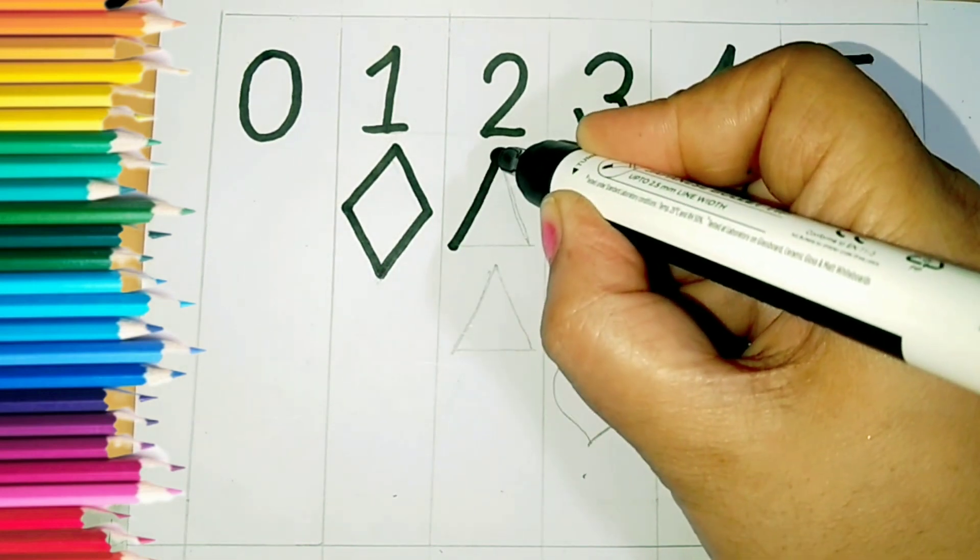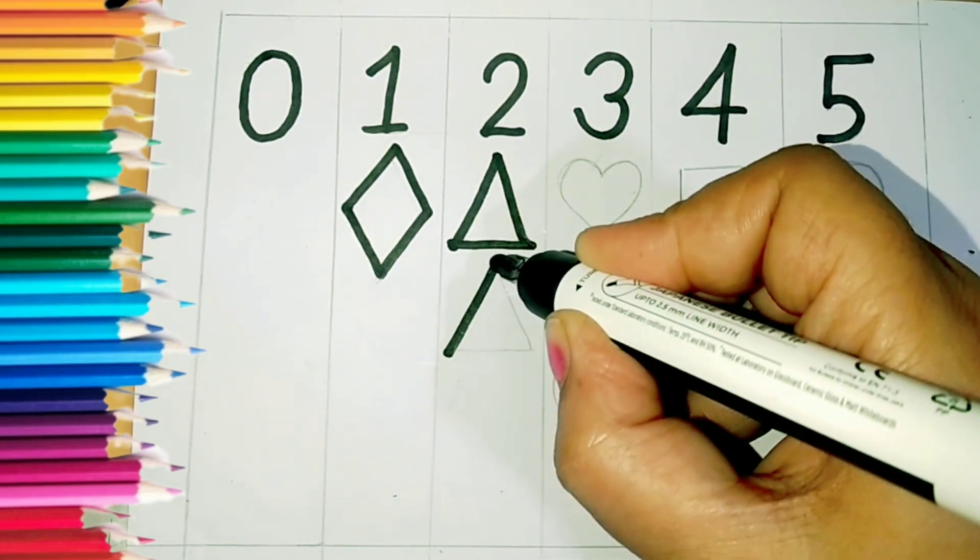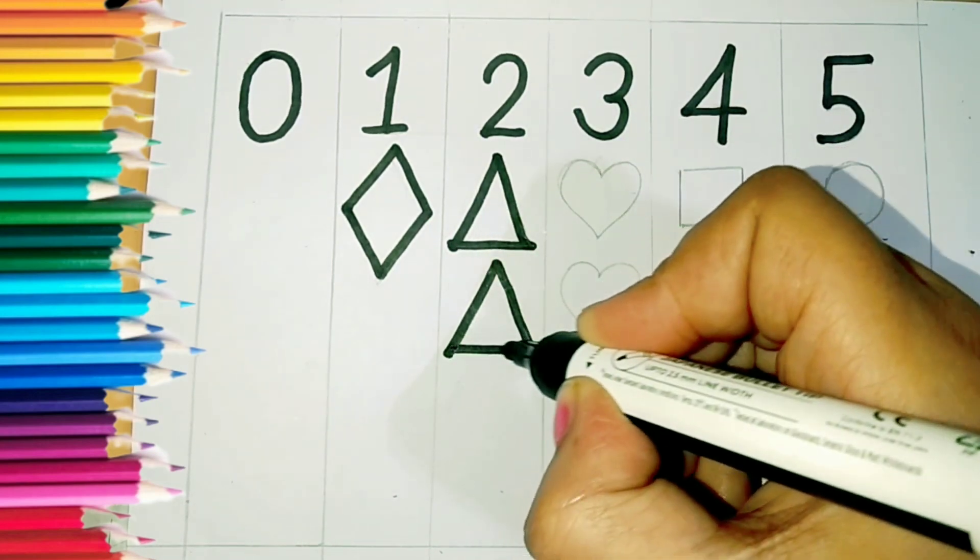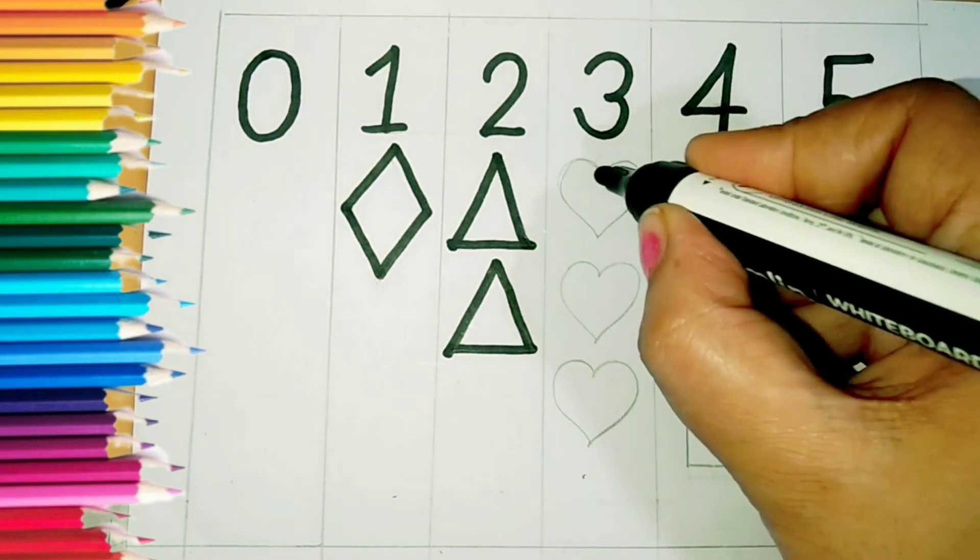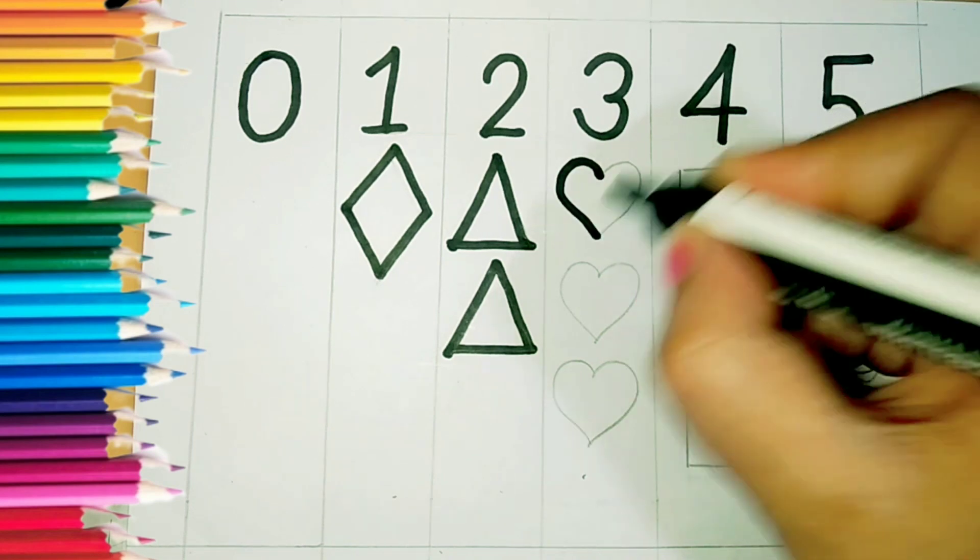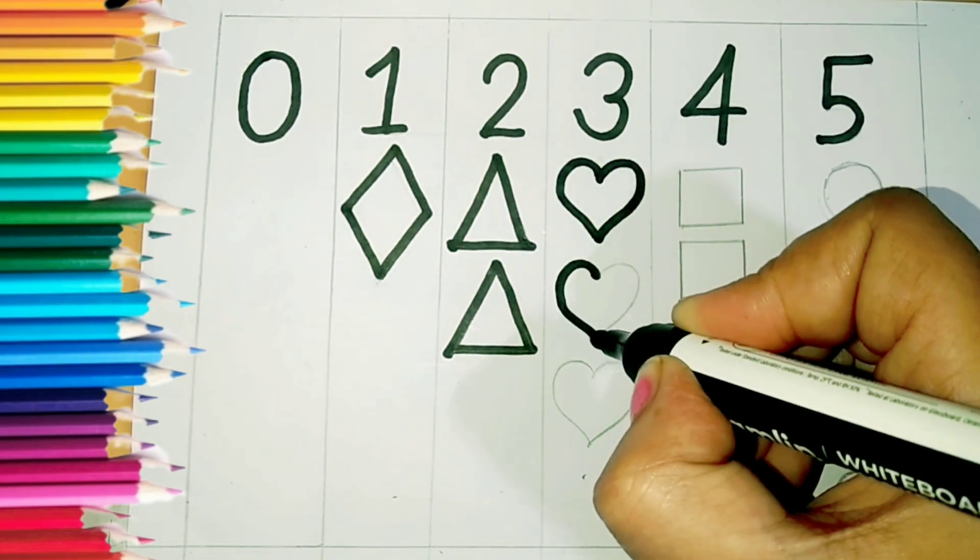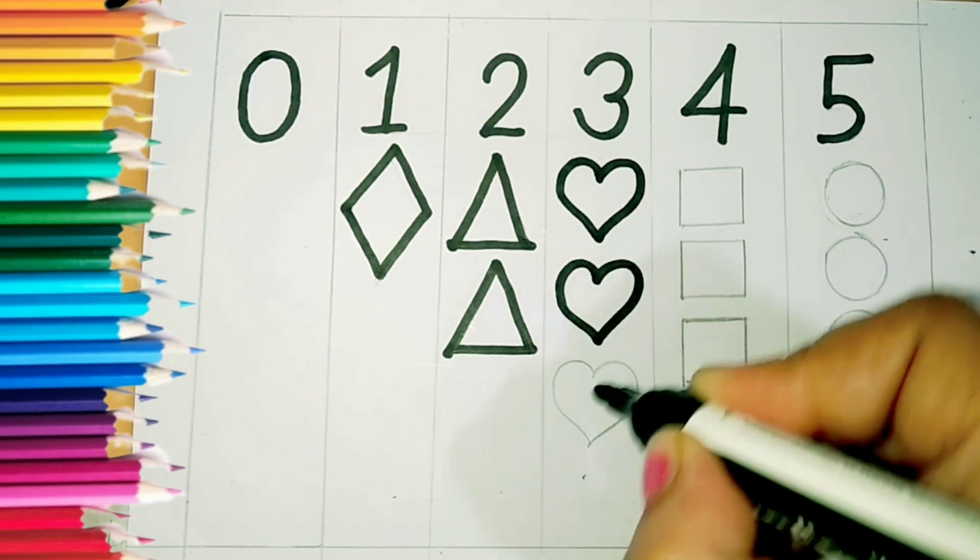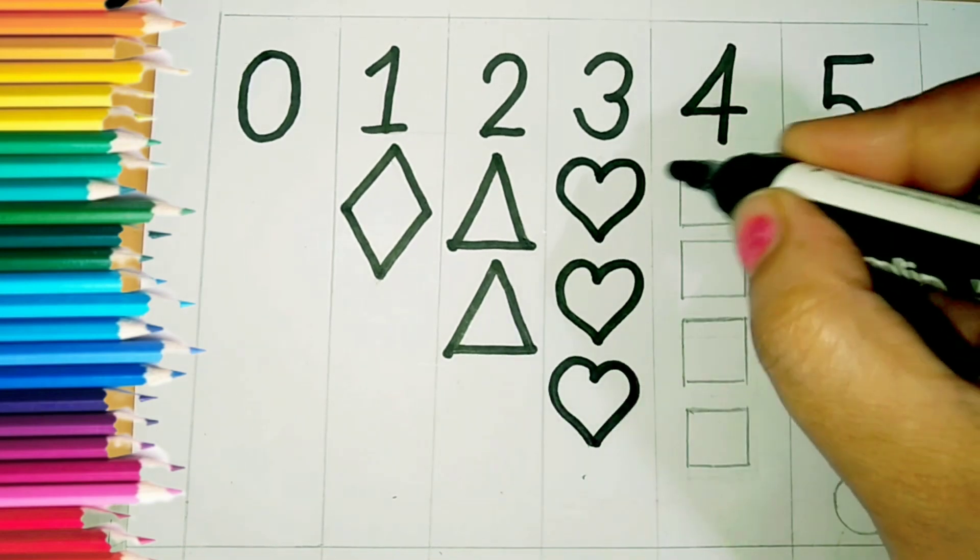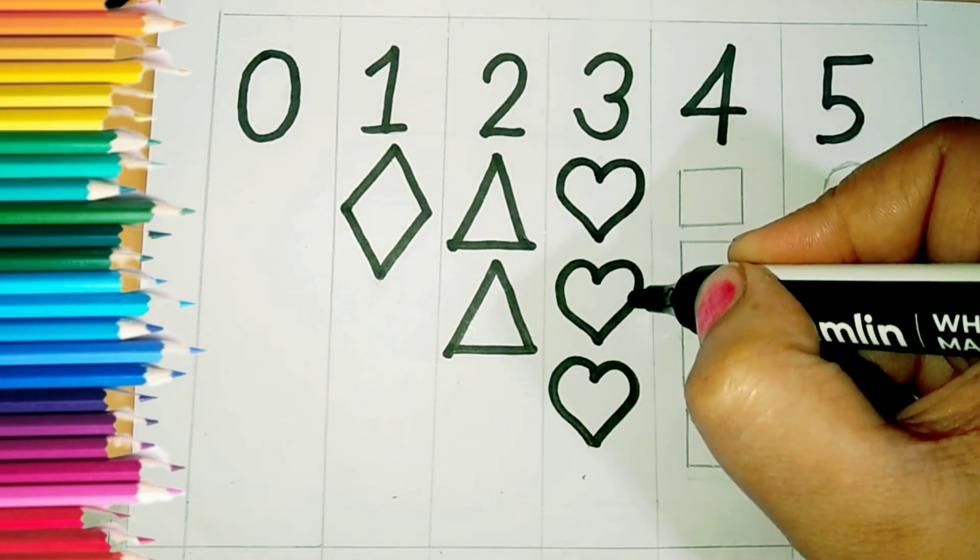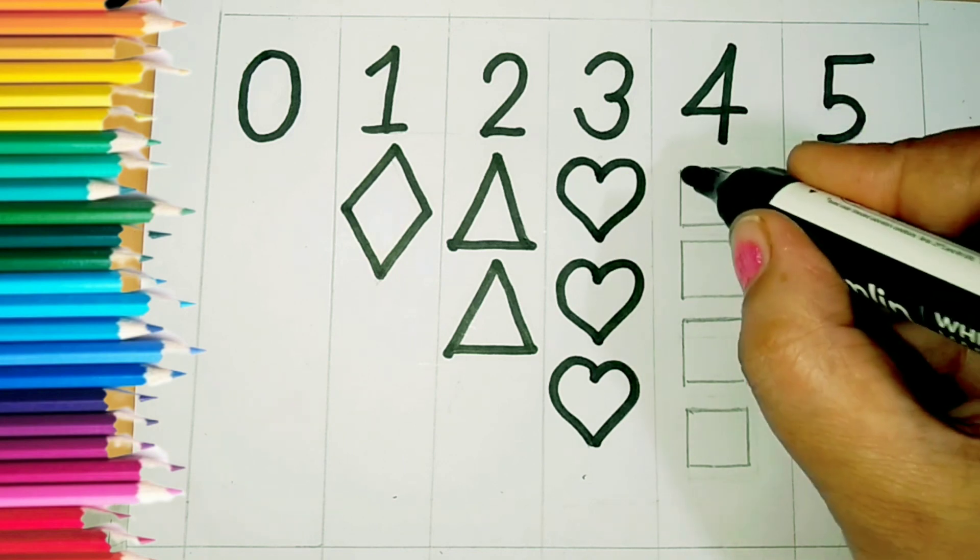This is a triangle. One and two, it's triangle. Heart, this is a heart. Now count, one, two, three. Three are heart.